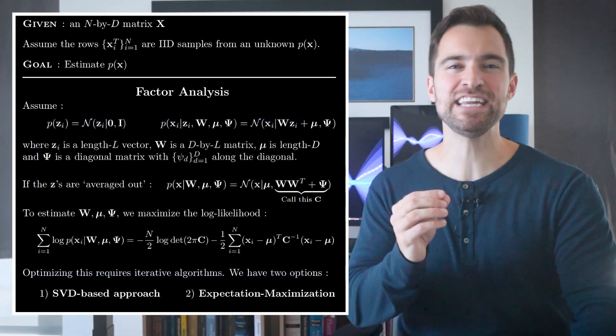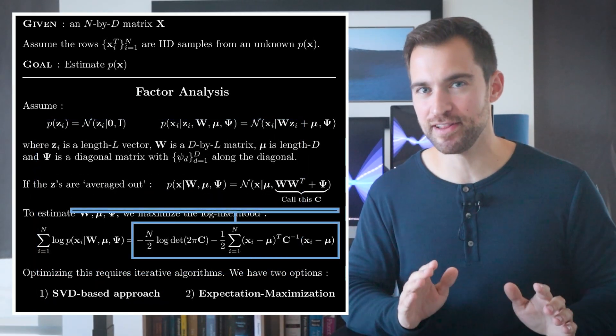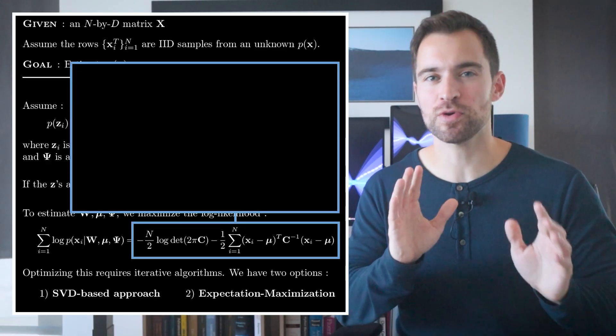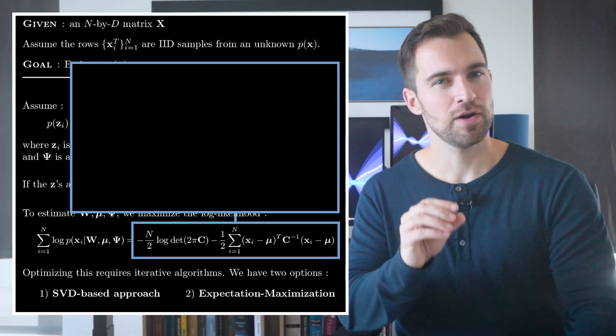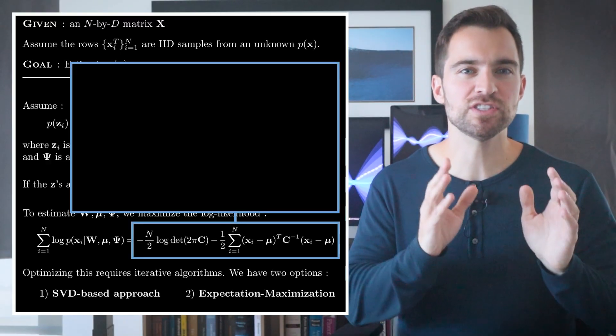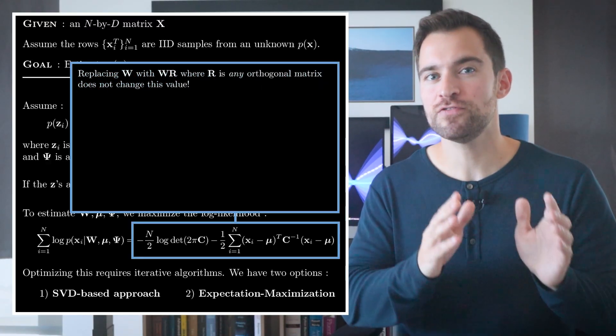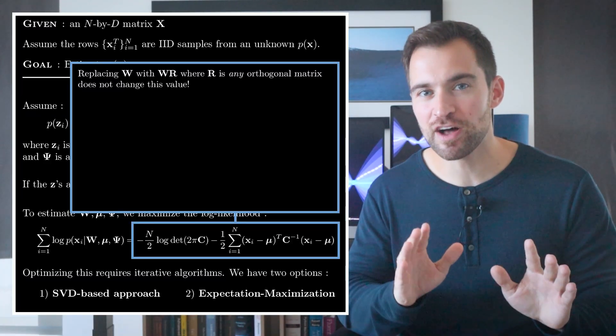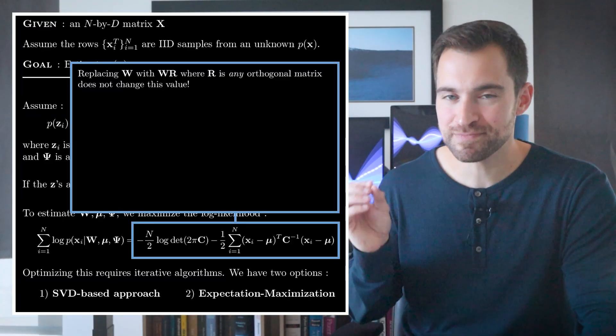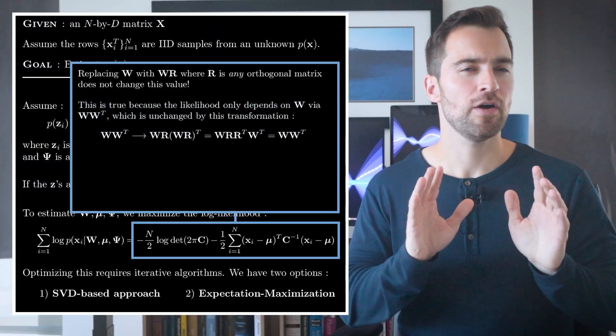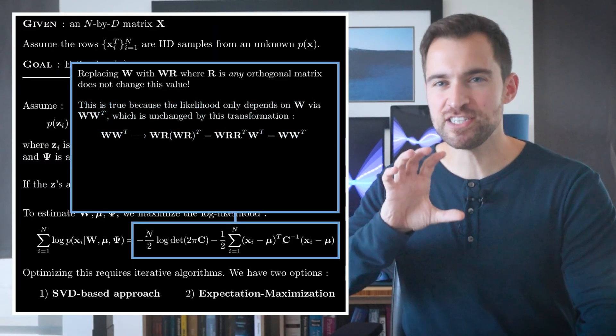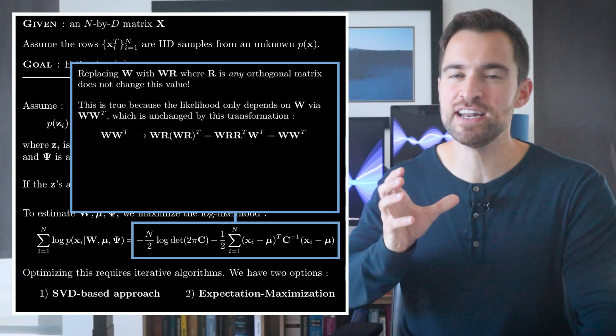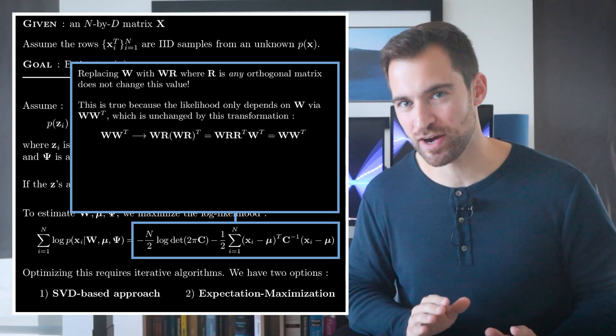Before moving on, I need to point out something regarding the log likelihood. The log likelihood is invariant to orthogonal transformations of w. What that means is, if you were to substitute in wr for w, where r is an orthogonal matrix, then the log likelihood value would not change. If you're curious, here's why that's true. The way I think about this is, changing the orientation of w doesn't make a difference, because the z's can have an offsetting orientation to explain the data in the exact same way.